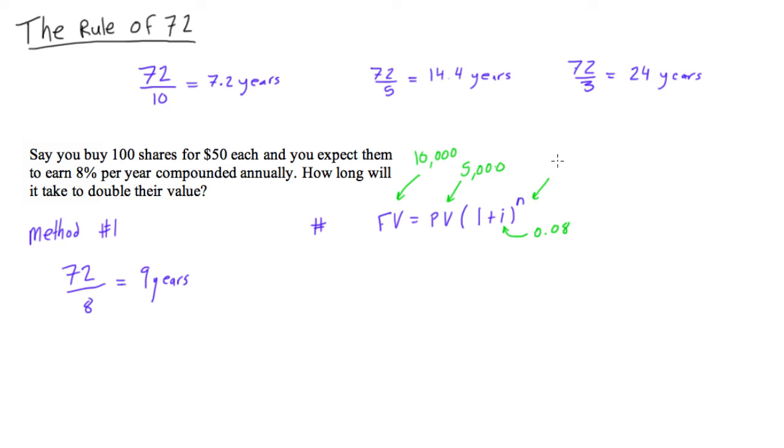And n, well, that's what we're looking for. This is the number of years that we're looking for. So if we just go and fill this in, we will get 10,000 is equal to 5,000 times 1.08 to the power of n.